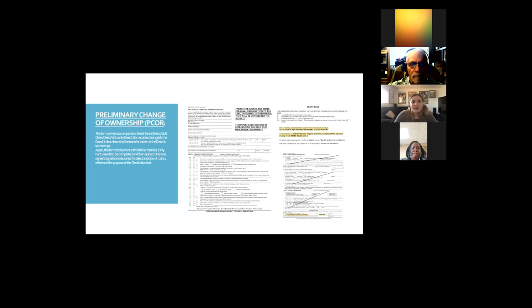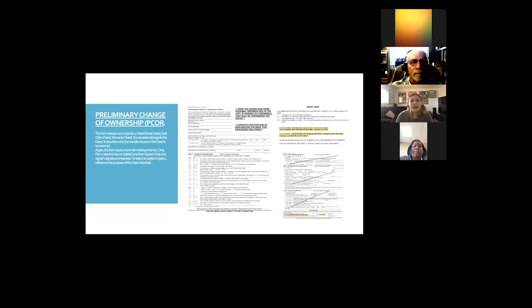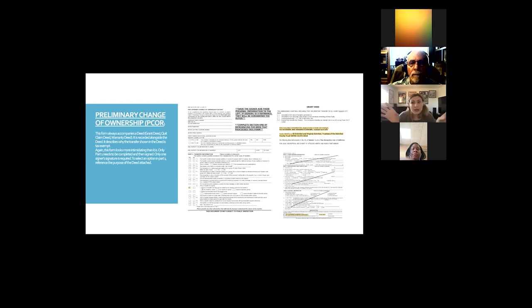The next form everybody has trouble with is the Preliminary Change of Ownership — sometimes called a PCOR. This form always accompanies a deed: a grant deed, quitclaim deed, warranty deed, or state-specific variants. It is recorded alongside the deed. This form comes into play if the transfer is tax exempt — if it's a transfer exempt from taxes for a list of reasons, this form will be included.